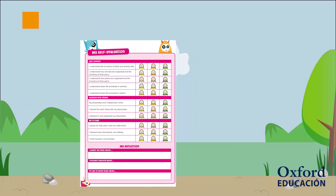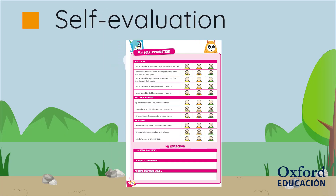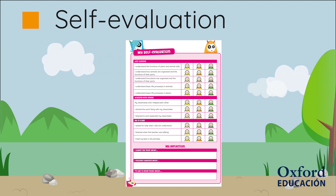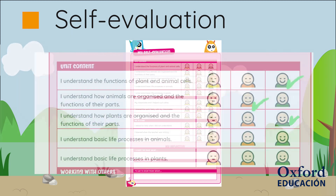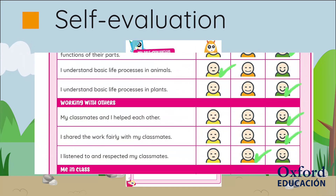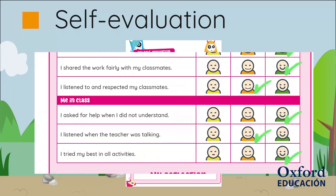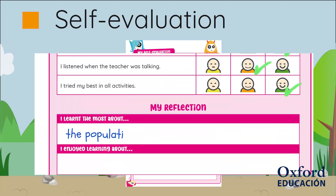When learners reach the end of an Oxford Flipped field book lesson, they complete a self-evaluation which encourages learners to take responsibility for their progress and to become active participants in their learning.